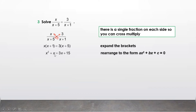Shifting 3x gives x minus 3x which is minus 2x, and 15 shifts over to become minus 15. We get the equation x squared minus 2x minus 15. Now we will factorize — for factorizing we need to split the middle term.